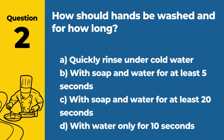Question 2. How should hands be washed and for how long? Answer: C. With soap and water for at least 20 seconds. Proper hand washing requires soap and water for at least 20 seconds to effectively remove germs and bacteria.